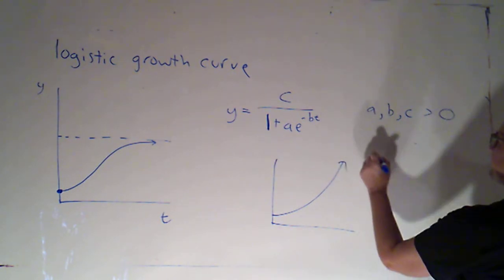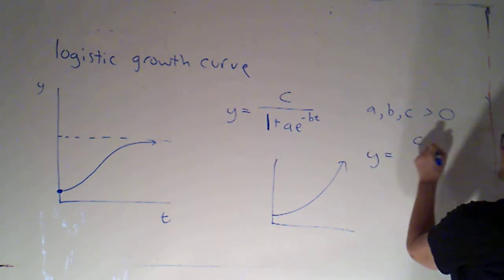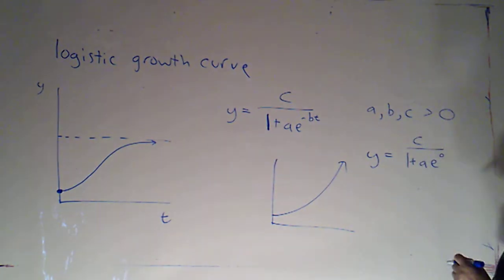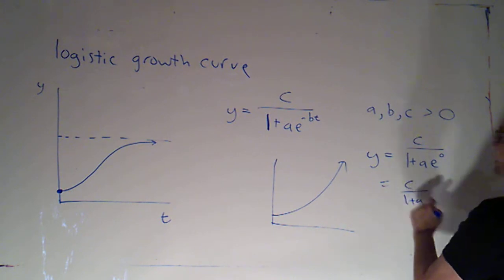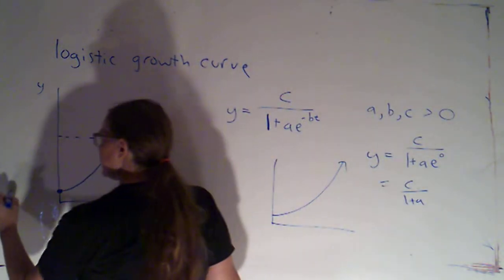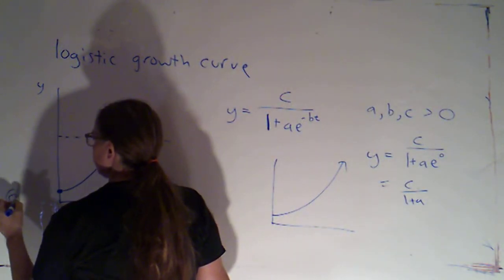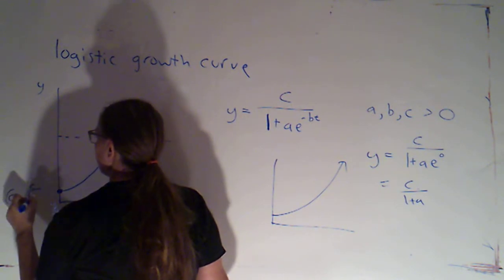Well, if I plug in 0 for t, I'm going to get y equals c over 1 plus a, e to the 0, that's just going to be c over 1 plus a. So my y intercept here would be (0, c/(1+a)).